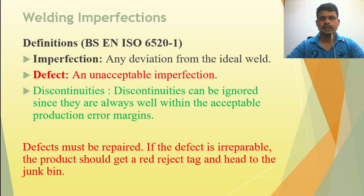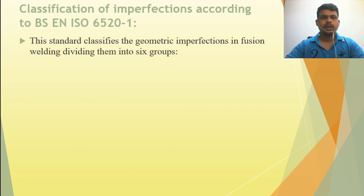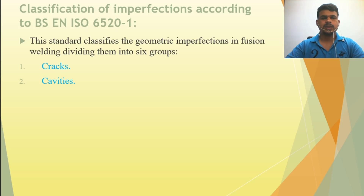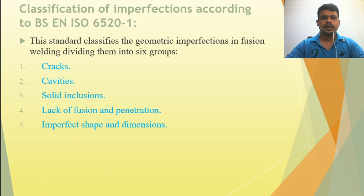The standard classifies geometry imperfections in fusion welding into six groups: (1) cracks, (2) cavities, (3) solid inclusions, (4) lack of fusion and penetration, (5) imperfect shape and dimension, and (6) miscellaneous imperfections. These six categories define the full range of welding imperfections.